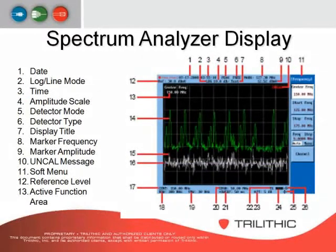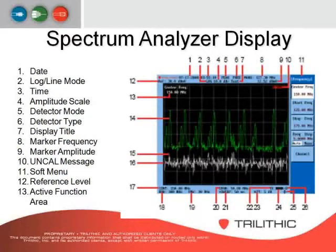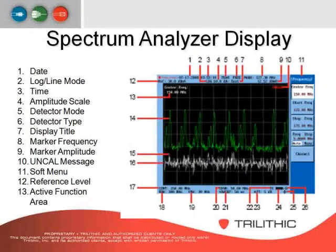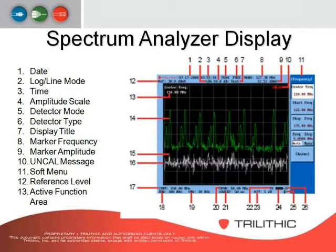This is a typical spectrum analyzer display. Starting with number one, the date — it displays the current date. Number two is the log/line mode, which displays whether amplitude is shown in logarithmic or linear mode. Number three is the current time. Number four is the amplitude scale, displaying the current amplitude scale. The detector mode displays whether the detector mode is currently enabled, and number six, the detector type, displays the type of detector currently enabled.